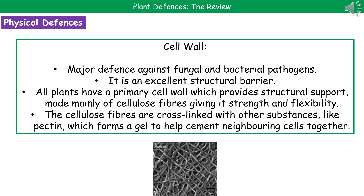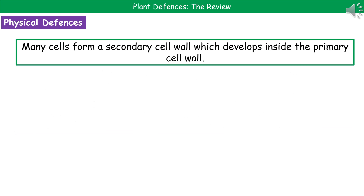The second physical defense to remember is the cell wall, which is a major defense against both fungal and bacterial pathogens because it forms an excellent structural barrier. Every plant cell has a primary cell wall that provides structural support, made mainly of cellulose fibers which give it both strength and flexibility. Those cellulose fibers are cross-linked with other substances like pectin, forming a gel that cements neighboring cells together. In addition, many cells also form a secondary cell wall that develops inside the primary cell wall.